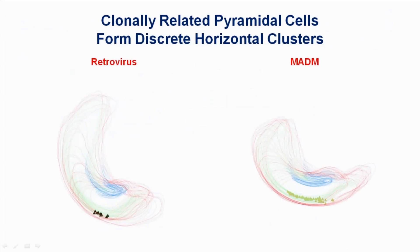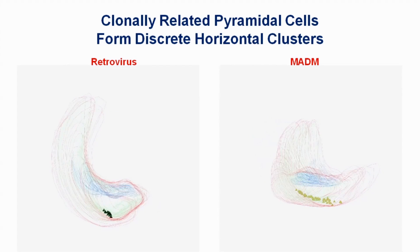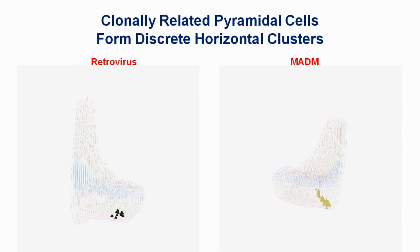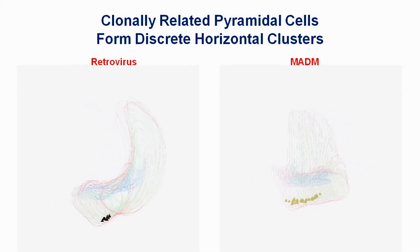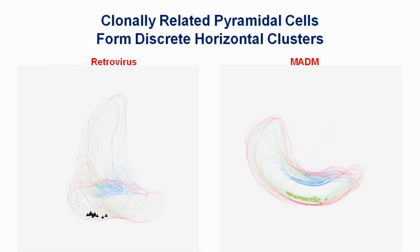To address this question, we used cell type-specific retrovirus and mosaic methods to genetically label clonally related pyramidal cells in the hippocampus. Interestingly, we found that sister pyramidal cells clustered horizontally but not vertically in the stratum pyramidale.